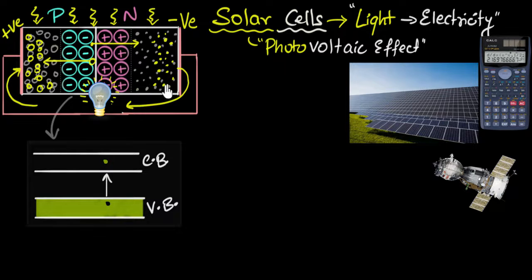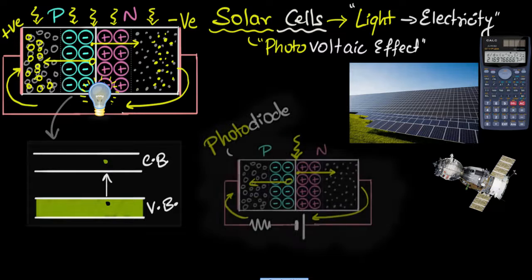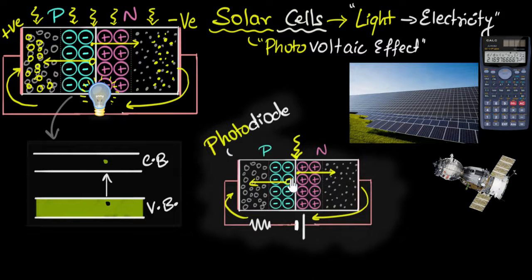So over here, we allow the charges to accumulate to generate a voltage, because we are using this as a cell. But in a photodiode, if you remember, in a photodiode, we do not allow the charges to get accumulated. And the way we do that is by reverse biasing. We attach this external cell.